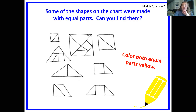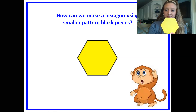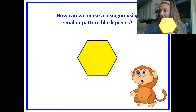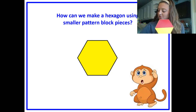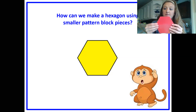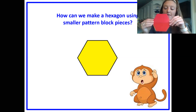Now we're going to look at a hexagon. How can we make this hexagon using smaller pattern blocks or pieces? I could use a trapezoid and another trapezoid — it completely covers it. These two trapezoids are the same pieces. So I could say I can use one, two trapezoids. Are these two trapezoids equal parts? They're both the same size, so I have two pieces that are the same size.